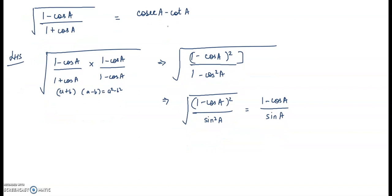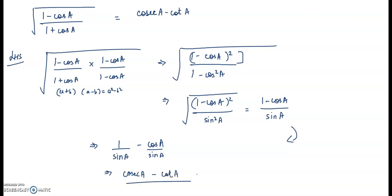We need to prove this equals cosecA − cotA. Writing it as 1/sinA − cosA/sinA: 1/sinA is cosecA, and cosA/sinA is cotA. So LHS = cosecA − cotA = RHS. Please do not skip any step — write the reason in the right margin, as the marking scheme allots marks for each step.